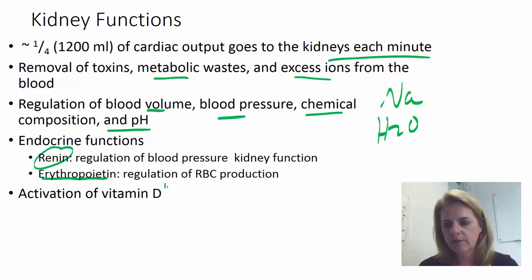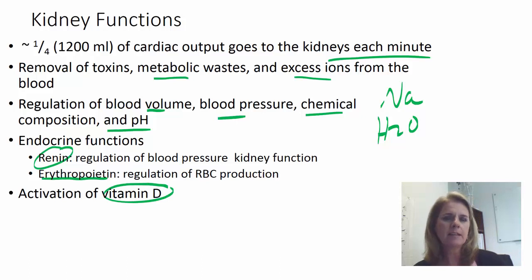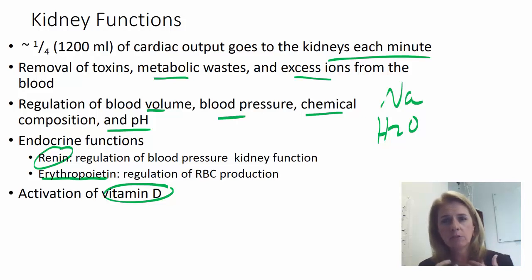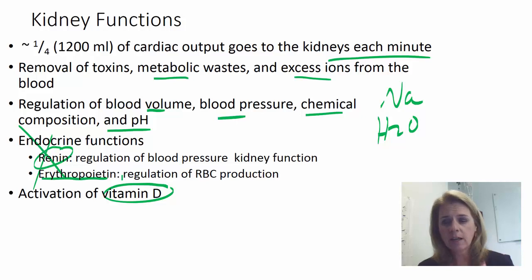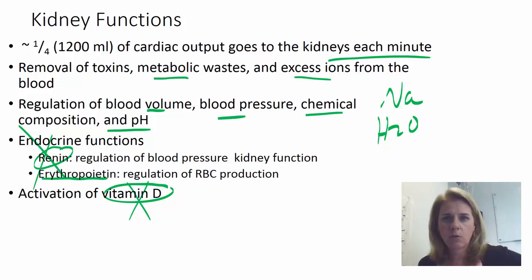The kidneys are also involved in the activation of vitamin D. Vitamin D starts out in your skin where UV light activates it, but the final processing of the chemical that becomes active vitamin D — which you need to absorb calcium in your small intestine — actually takes place in the kidneys. So people with kidney damage or kidney failure are going to have reduced filtration, reduced endocrine function, and can have reduced vitamin D availability. The kidneys do more than just make urine.